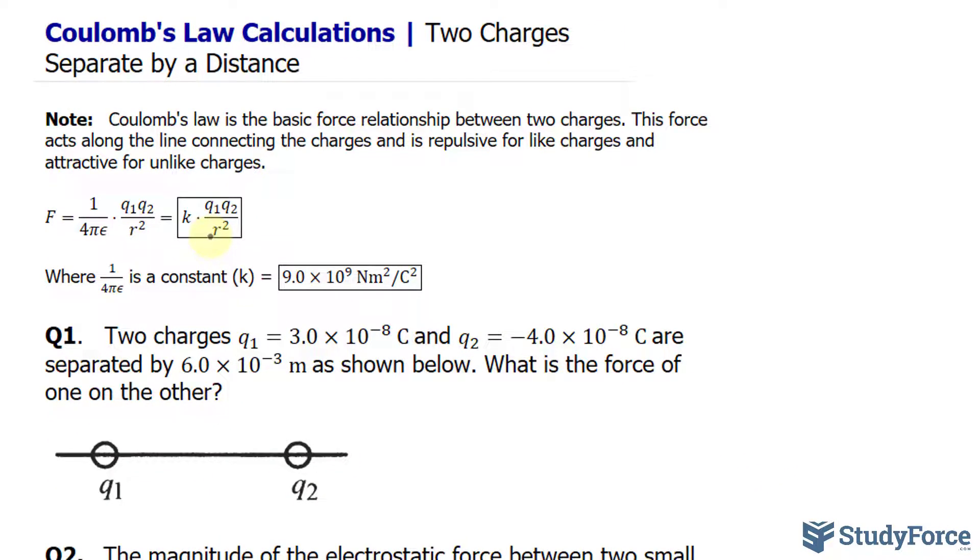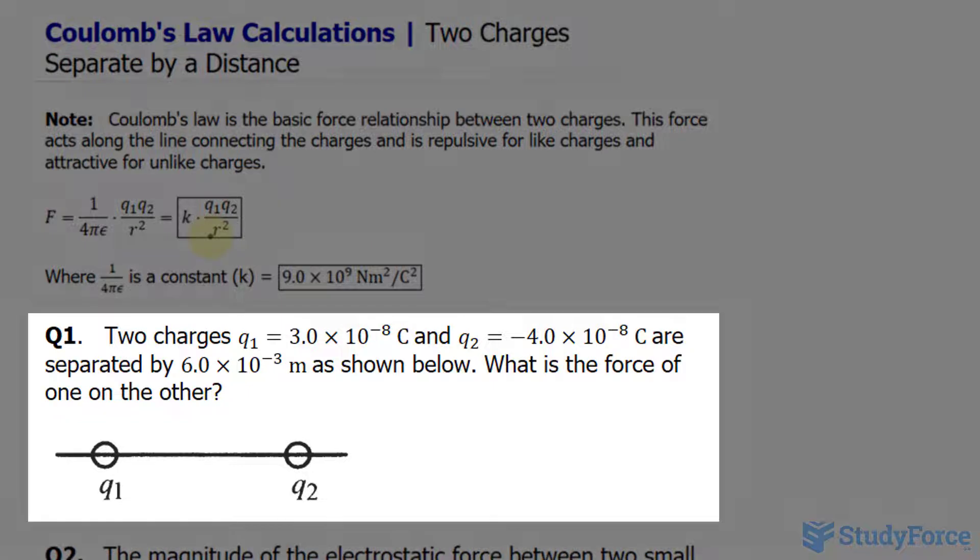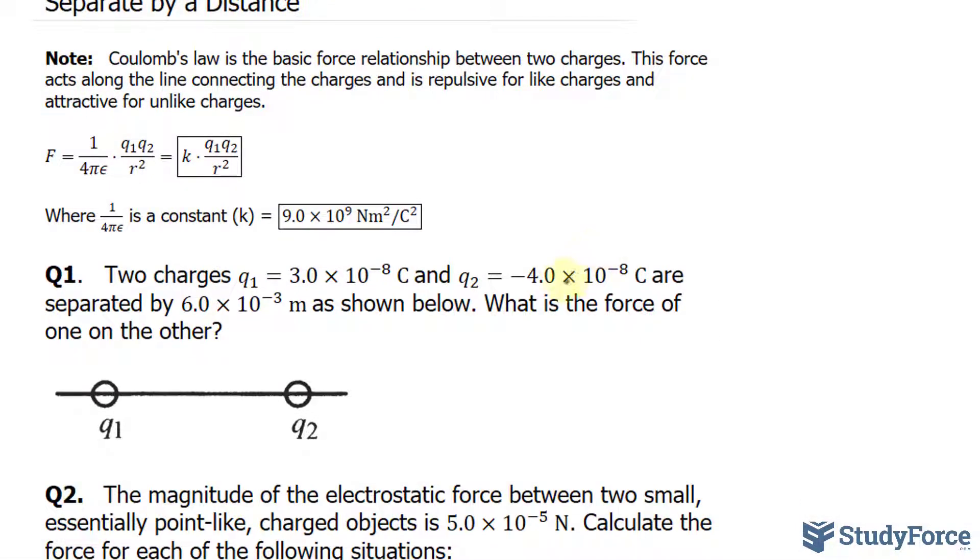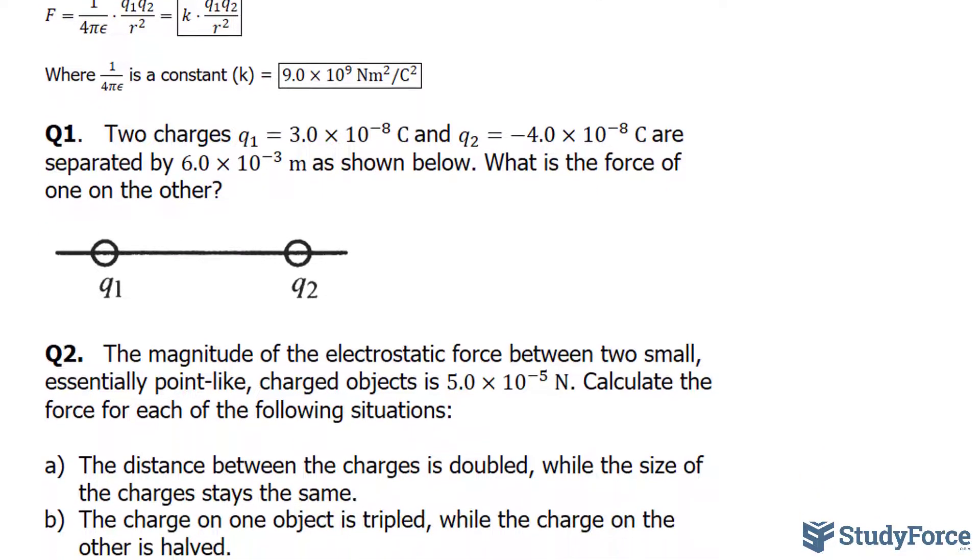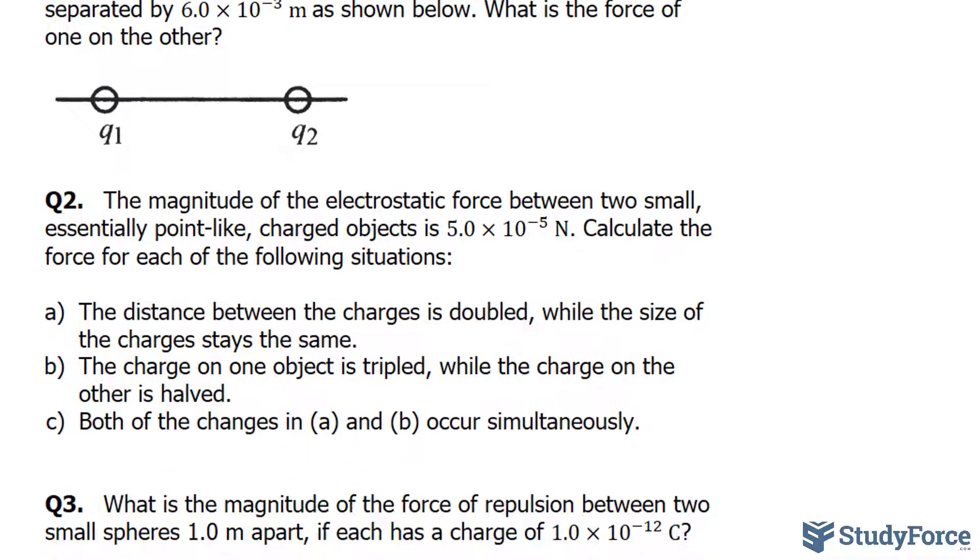Question one reads: two charges, the first charge being 3.0 times 10 to the power of negative 8 Coulombs, and the second one being negative 4.0 times 10 to the power of negative 8 Coulombs, are separated by 6.0 times 10 to the negative 3 meters as shown below. What is the force of one on the other? This is one of the most basic questions involving Coulomb's Law. I want to start with something easy and then make our way into questions that are a little more difficult.